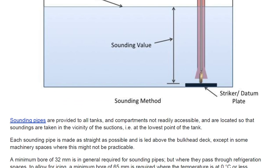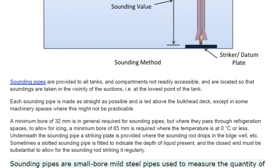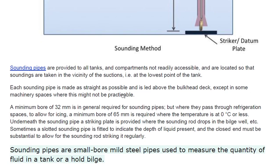Sounding pipes are provided to all tanks and compartments not readily accessible, and are located so that soundings are taken in the vicinity of the suctions at the lowest point of the tank. Suction is generally from the bottom, so this is also from the lowest portion.